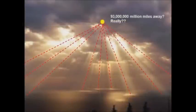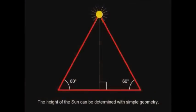So if you're able to measure the angle of the Sun rays, you can basically, with a bit of simple geometry, figure out exactly how high the Sun is. And that turns out to be about 3,100 miles.